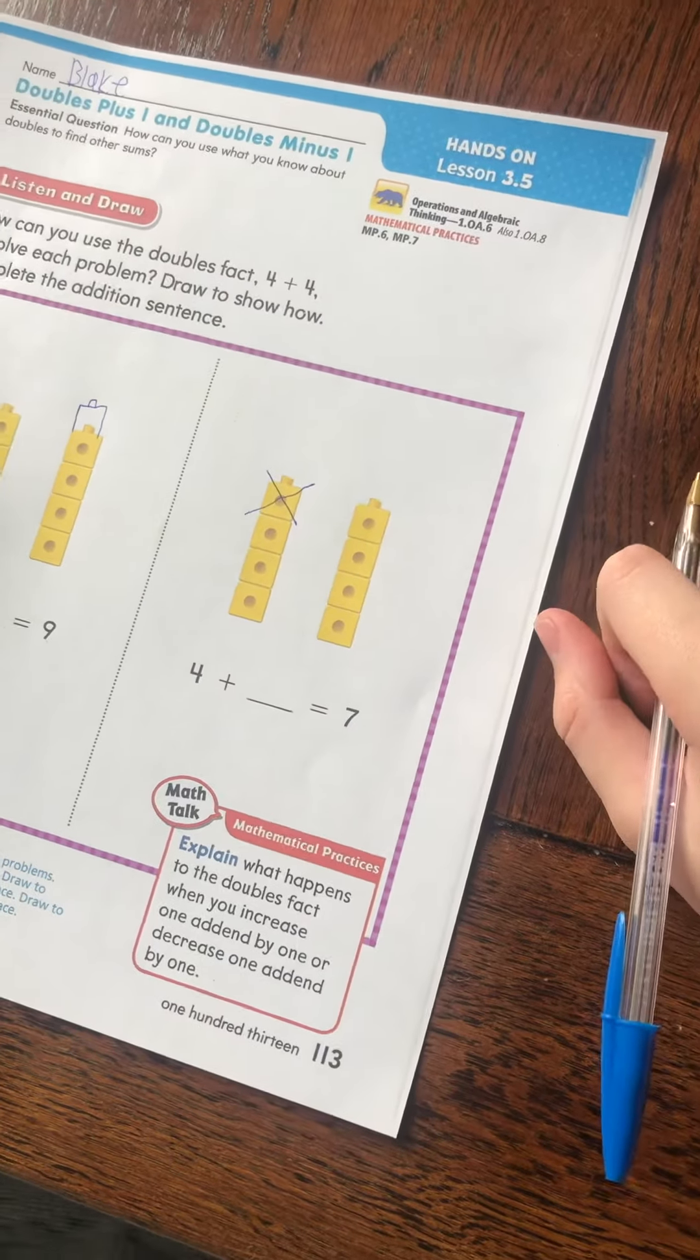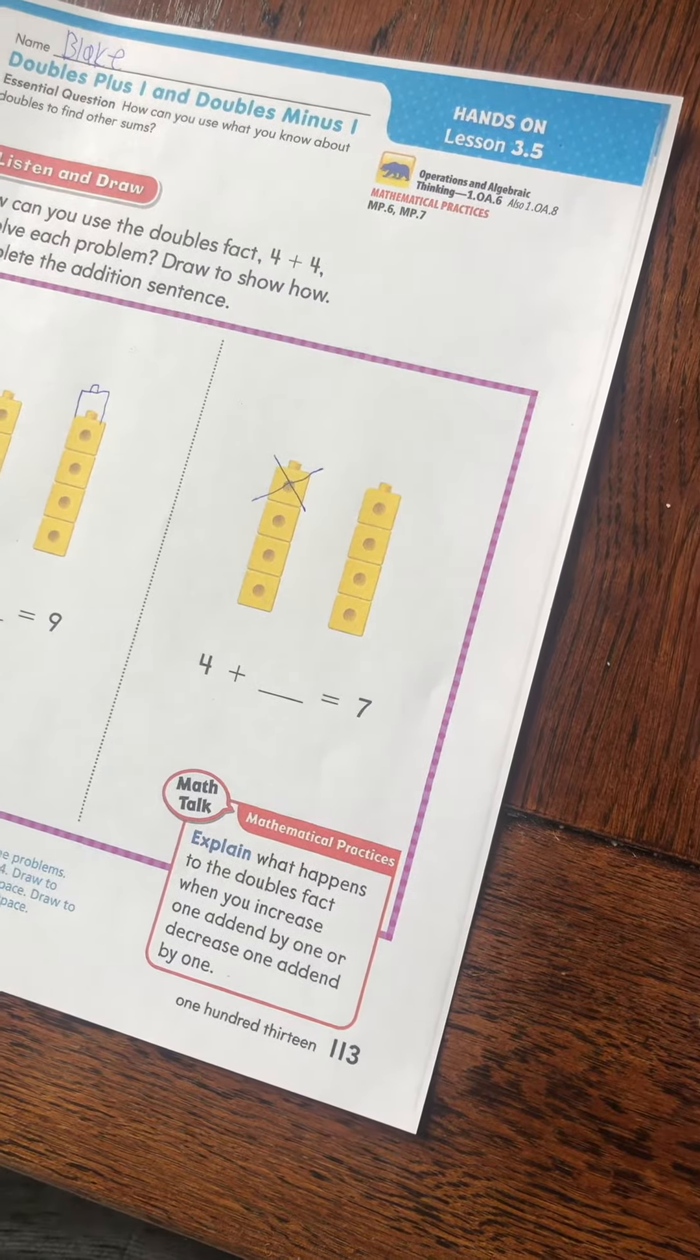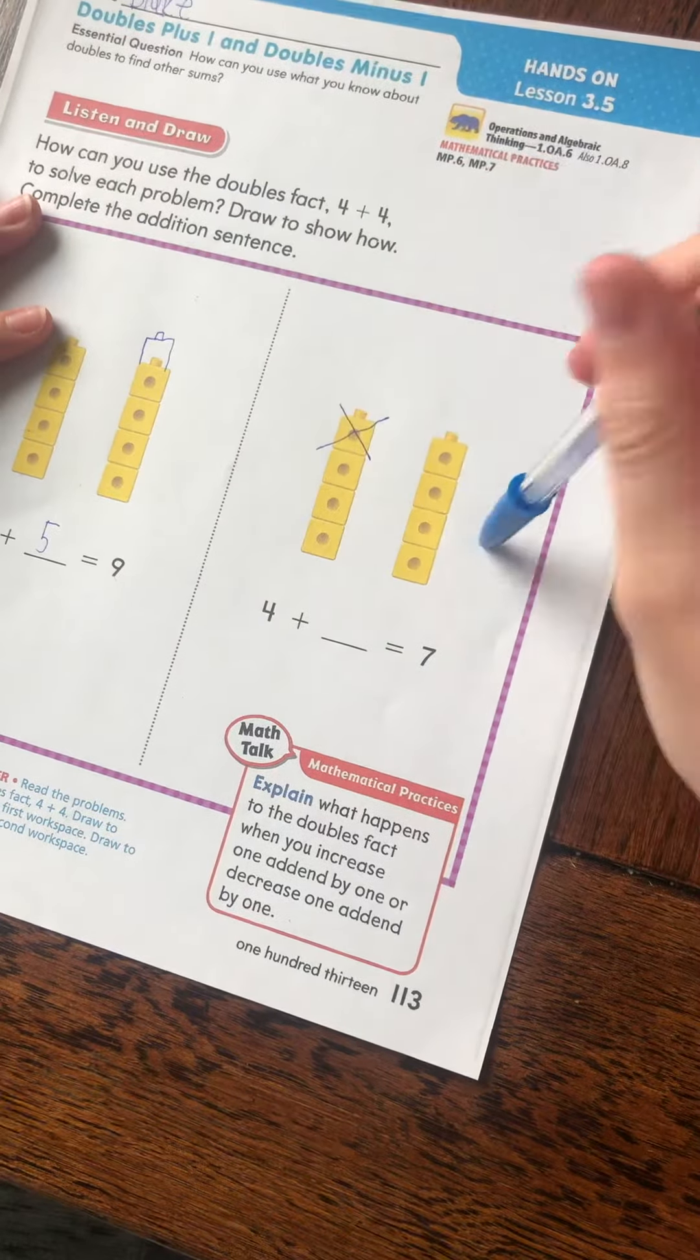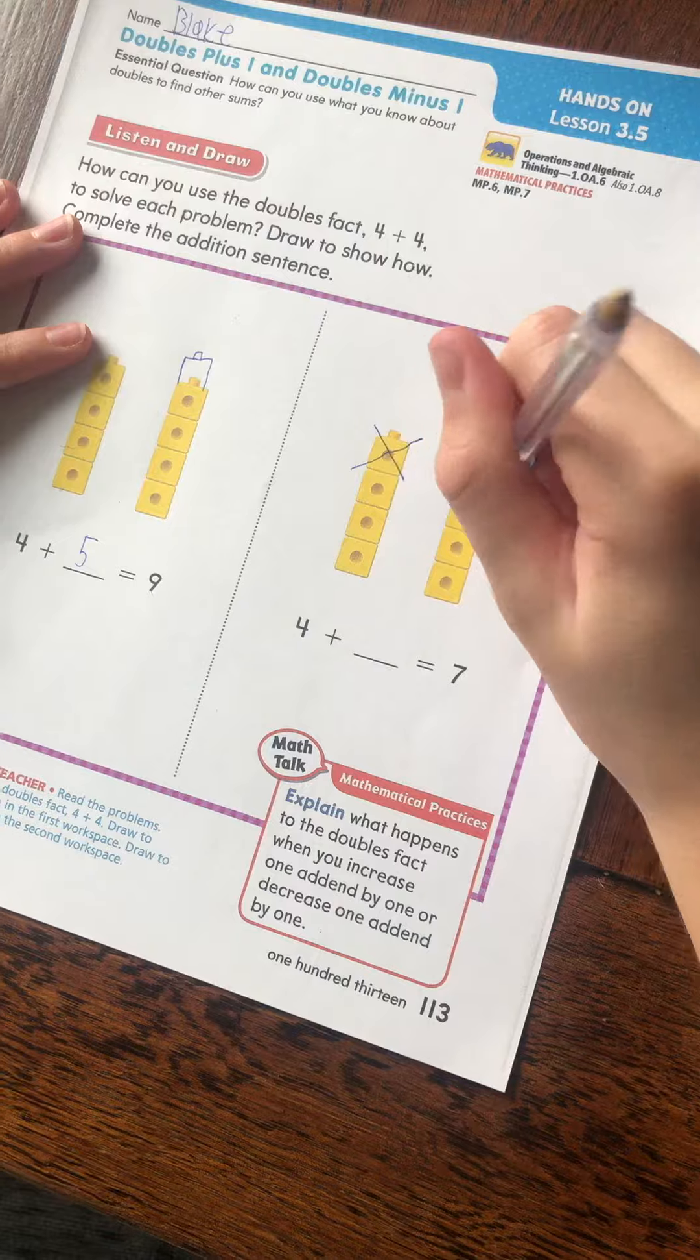Okay. So that would be 4 plus 3. 4 plus 3 equals 7. Count them to make sure. 1, 2, 3, 4, 5, 6, 7.